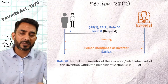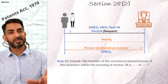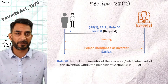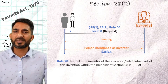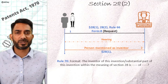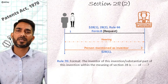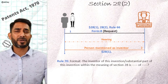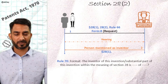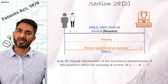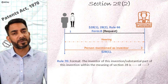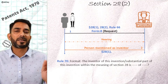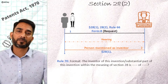Rule 70 provides a format using which such a mention can be included in any relevant documents of a patent application. One interesting point to note at this stage is that such mention of inventors is only for academic purposes — there are no additional rights which are conferred, nor are there any rights which are derogated. This is the mention of inventor as per Section 28.